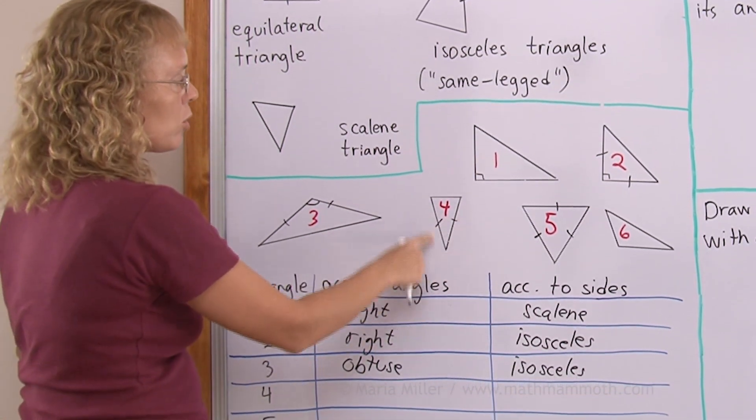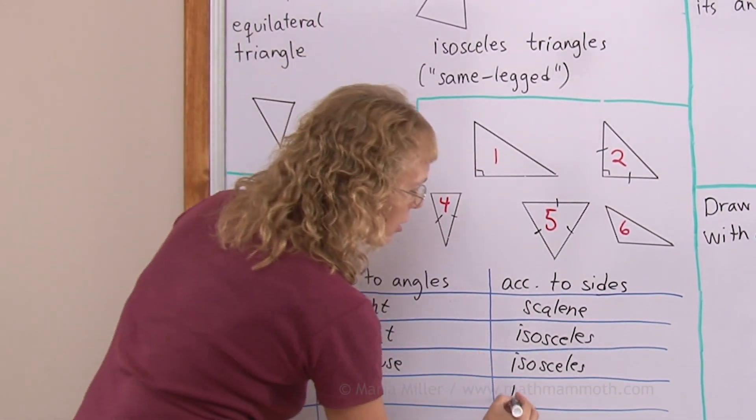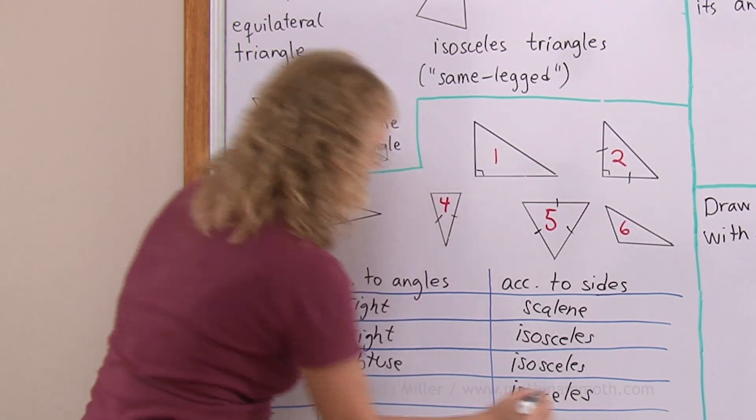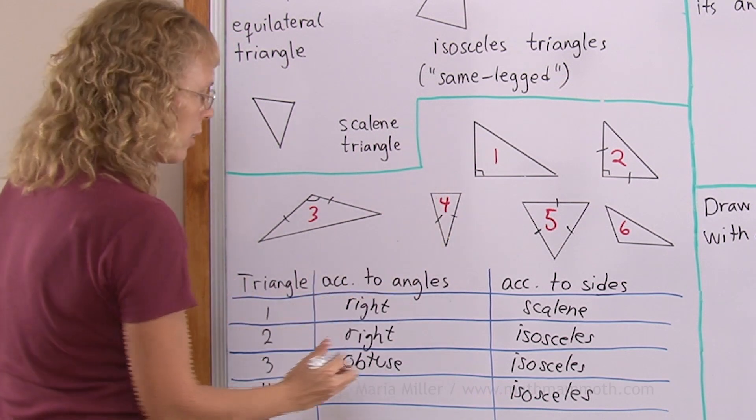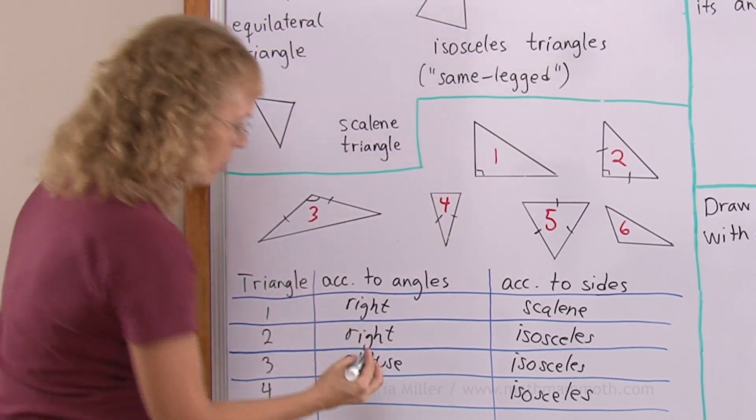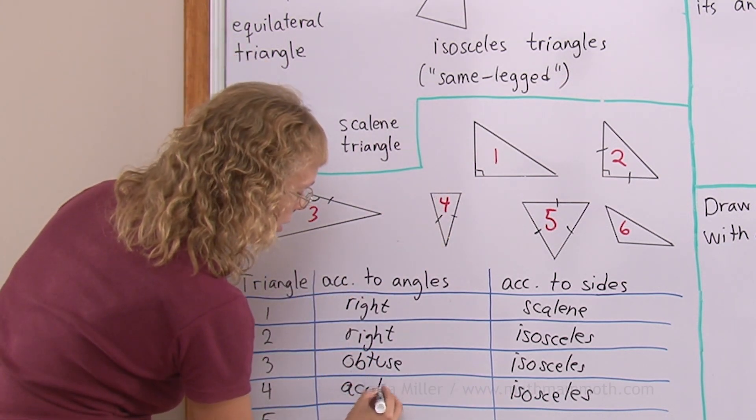Number four. Again, two congruent sides. Again, an isosceles triangle. And its angles here, it's a sharp or acute angle. All are acute. All angles are acute. So an acute triangle this time.